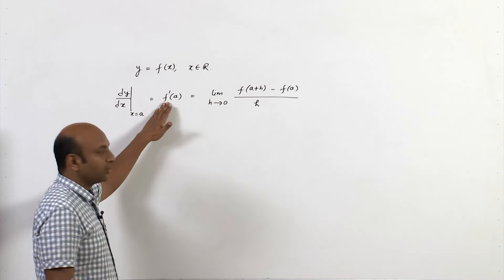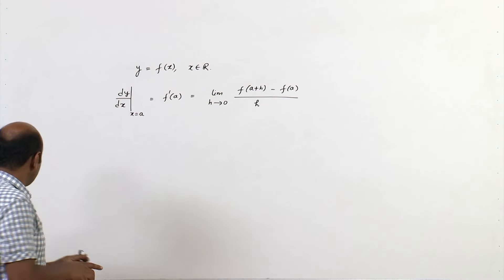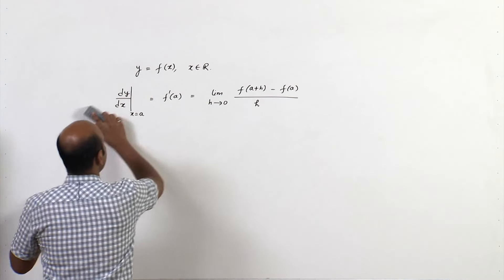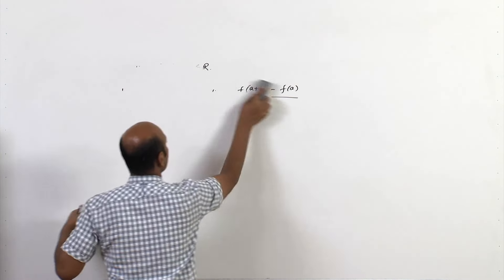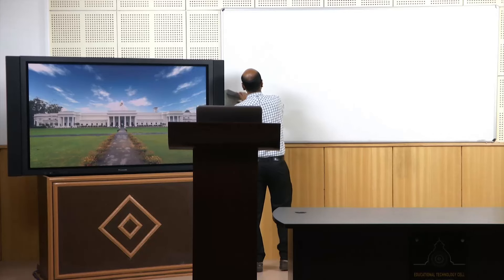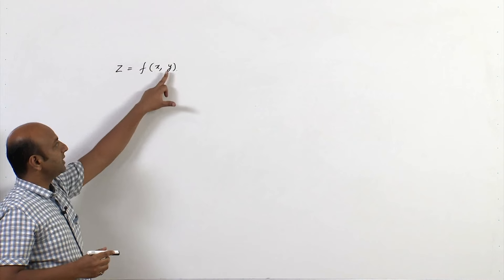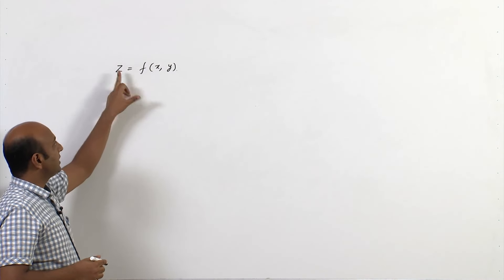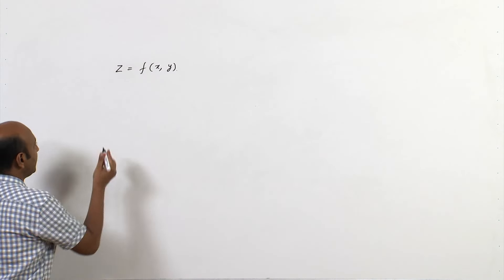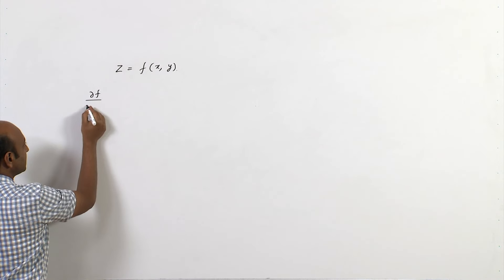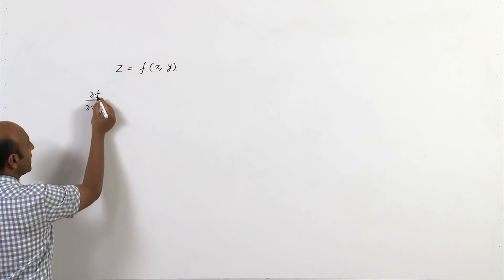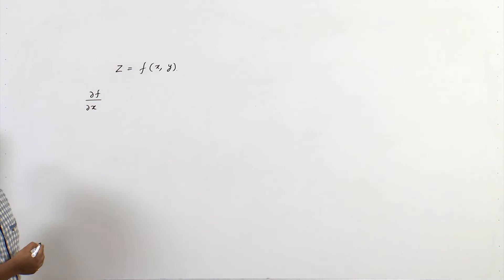Here we have a function of more than one variable, and so we introduce the concept of partial derivatives. Suppose we have a function z = f(x, y) where x and y are independent variables and z is the dependent variable. We define ∂f/∂x as the partial derivative of f with respect to x.